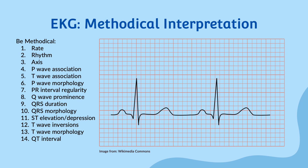Next, we'll check the axis. Again, for the sake of this lecture, we'll say it's normal. However, a peek at the previous slide or other EKGs will show you that if leads I and AVF are both positive, the axis is between 0 and positive 90 degrees, giving us an axis that is within normal limits.